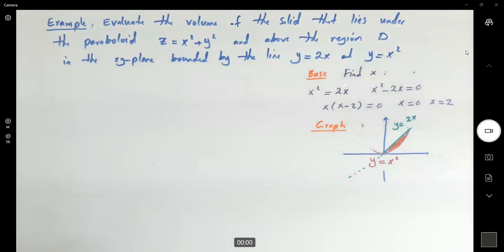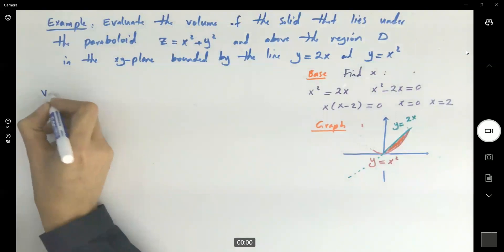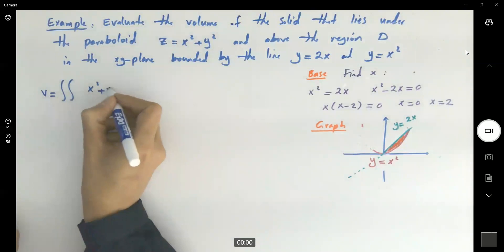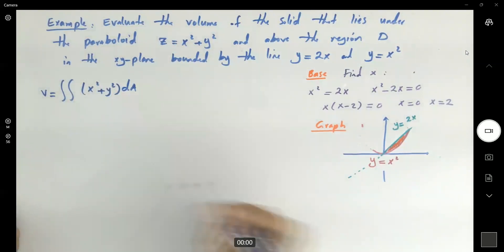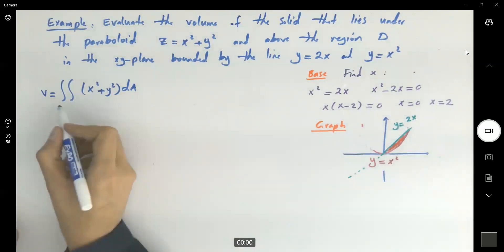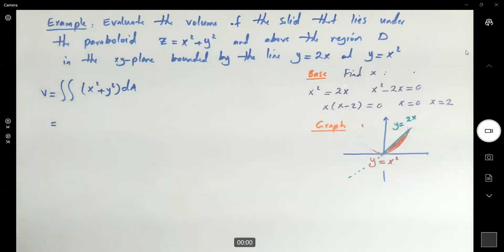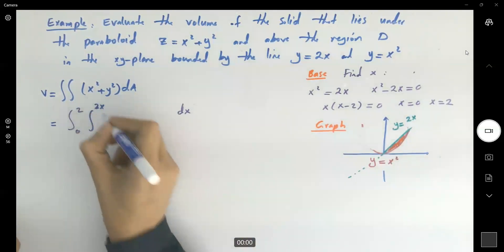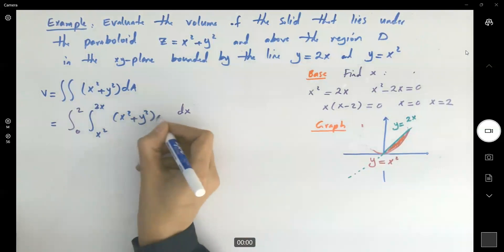Let's set up a double integral to find this volume. In this case, this volume V is equal to the double integral of the ceiling x squared plus y squared dA. Since our x values are fixed values, we're going to use them as the outer integral. So you have the integral 0 to 2, and the inner integral which is your lower bound is x squared and your upper bound is 2x of x squared plus y squared dy.